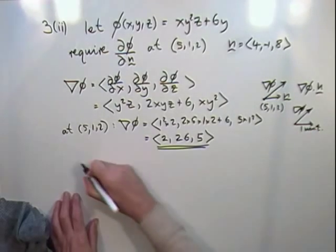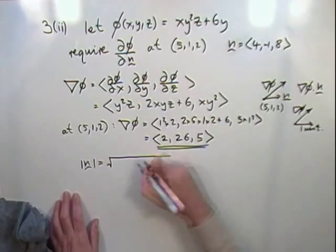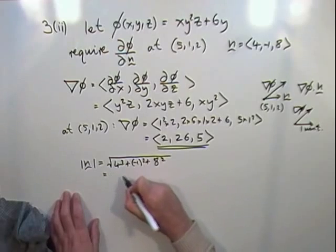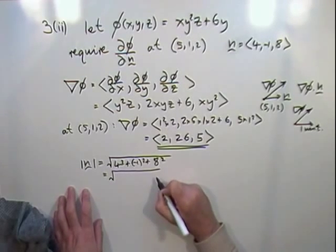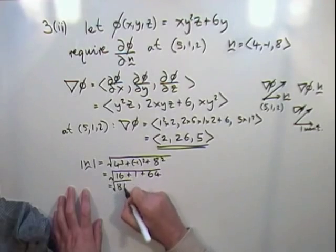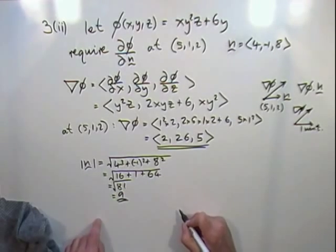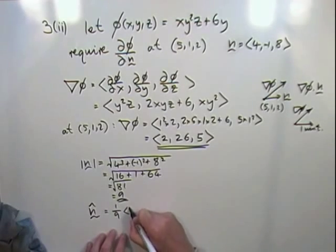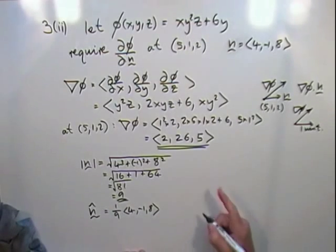So that's the grad of phi. Now, that's to be a unit vector. So the length of n is given by its components here, squaring them. So that would then be, I've got the square root of 16 and 1 and 64. Handily, that's 81. So that's exactly 9. Good. So that means that the unit vector, just to use that notation there, it's going to be a 9th of the 4, negative 1, 8.